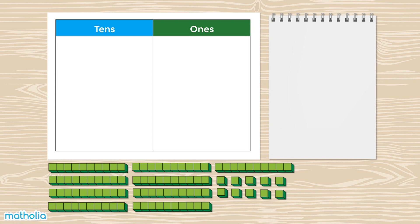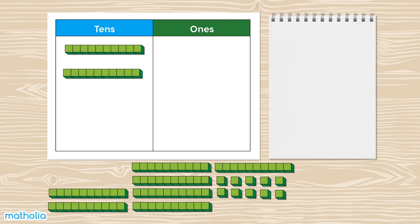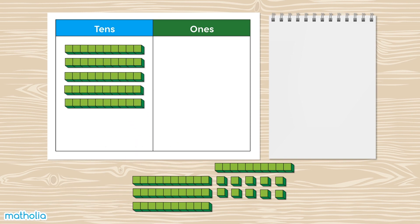Let's add 52 and 37 using base 10 blocks and a place value chart. We can show 52 using 5 tens and 2 ones. Let's write 52 here.